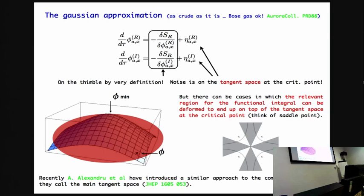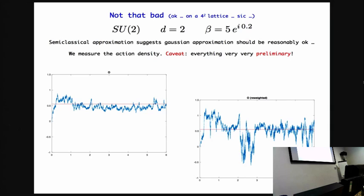They ended up in a sense to something which is similar. They put even forward that approach, as we know, as we heard before. So how is this Gaussian approximation working for SU in two dimensions? Well, you get a good signal.